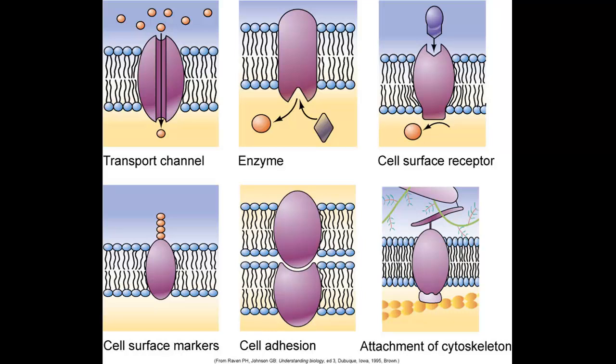We can also have an enzyme that attaches to a receptor on that channel and helps a molecule get into the cell. We can have a cell surface receptor that stimulates a particular channel to either open or close — for example, telling the cell to stop excreting a particular substance. Cell surface markers can also mark that channel for other types of substances coming by.